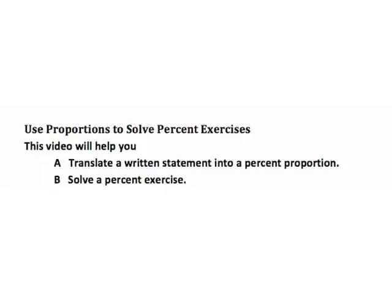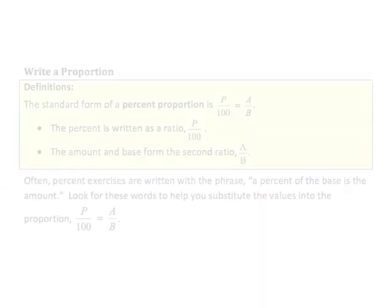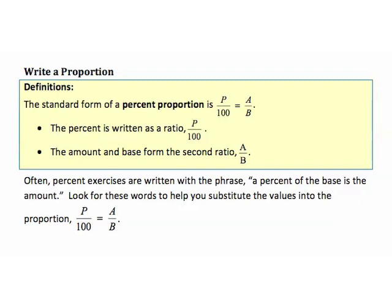Use proportions to solve percent exercises. This video will help you translate a written statement into a percent proportion and solve a percent exercise. The standard form of a percent proportion is p over 100 equals a, the amount, over b, the base. The percent is written as a ratio, p over 100. The amount and the base form the second ratio, a over b.